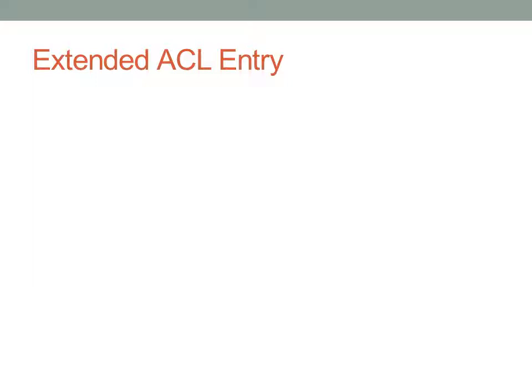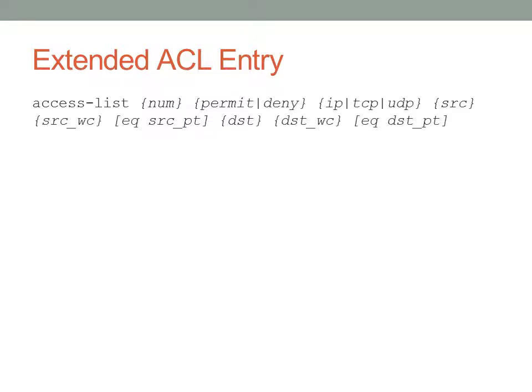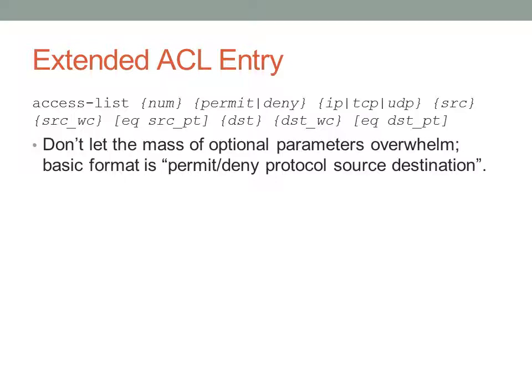Extended access lists are the more powerful and probably more commonly used of the two types. The format is: access-list, then a number, then permit or deny, followed by the protocol, then the source, and then the destination. So access lists are typically: permit or deny, protocol, source, destination.